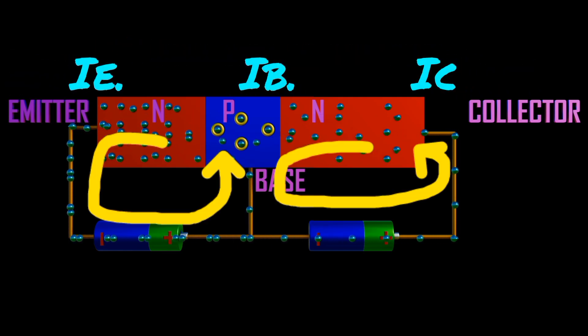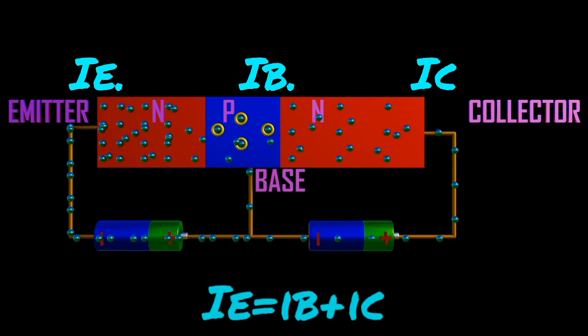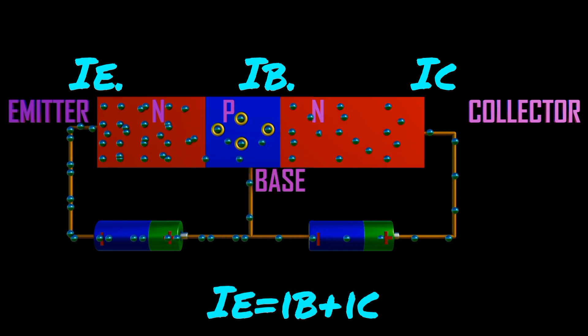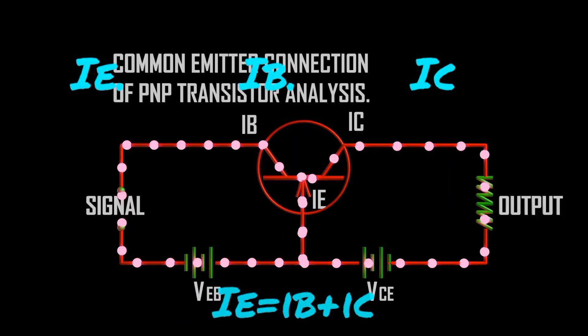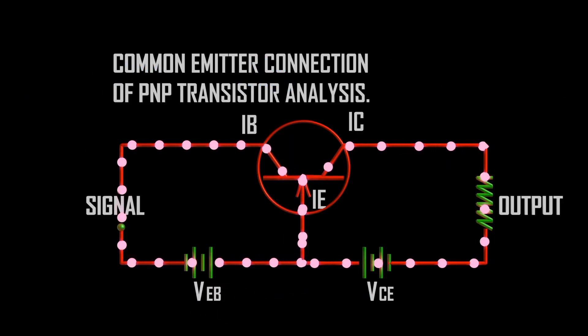The remainder of electrons cross the base and constitute the collector current. Therefore we arrive at the equation: I_E equals I_B plus I_C.